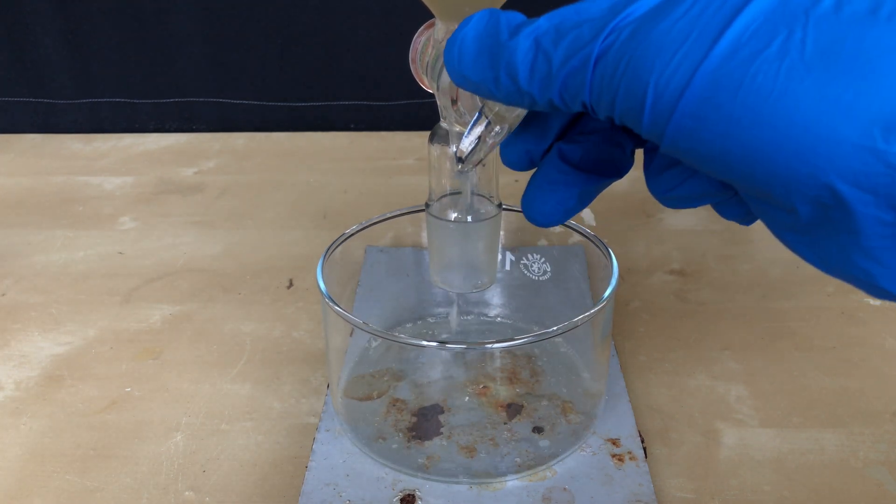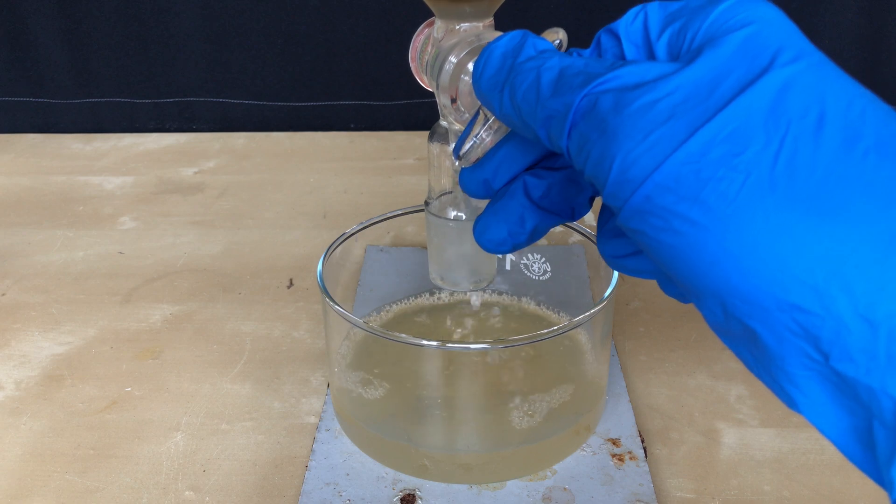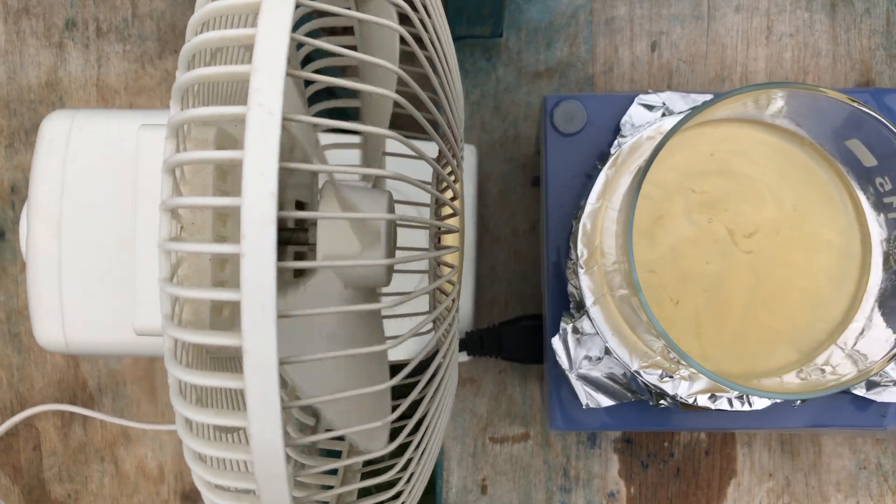The DCM layer was simply drained off into an evaporating dish and the solvent was evaporated using a fan and a hot plate on low heat. Half an hour later we were left with this solid.